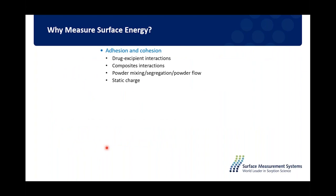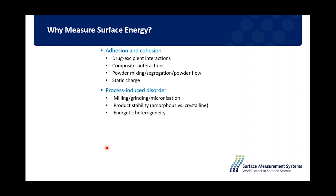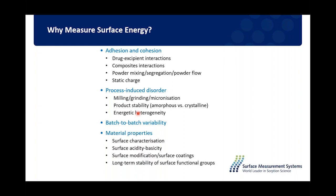Surface energy affects many material properties: adhesion and cohesion, how different processes might induce surface changes, aging or weathering. It is a very sensitive technique that can detect batch-to-batch variability — impurities, different suppliers, or slight differences in particle size, shape, or habit can all affect surface energy. It can also be used to look at surface reactivity, acidity or basicity, and how surface modification or coating affects interfacial properties.